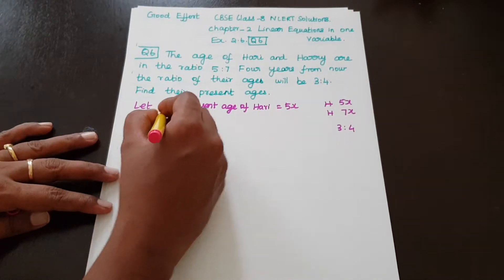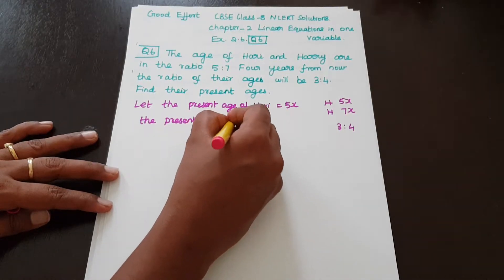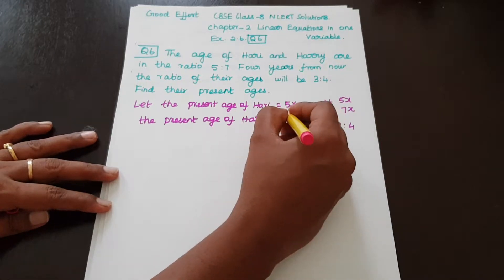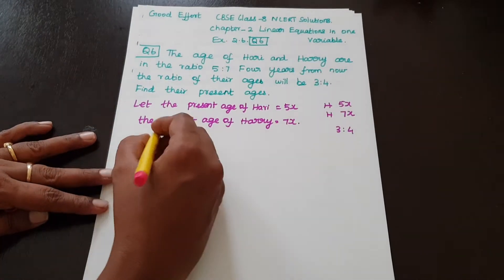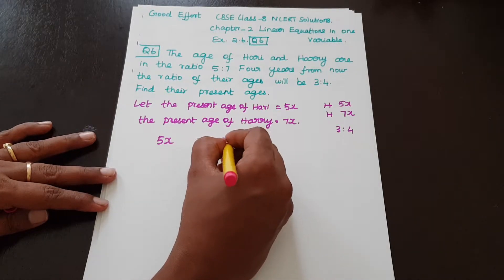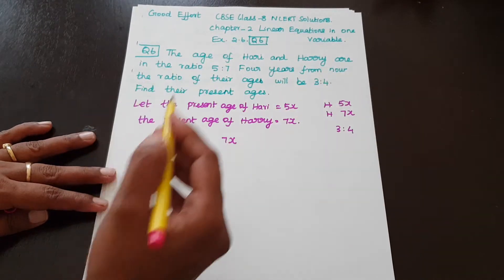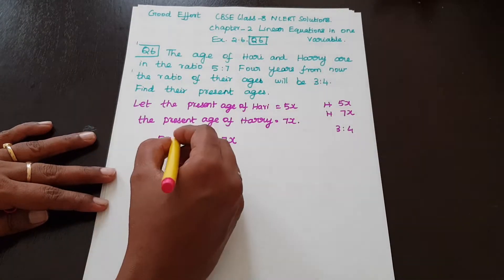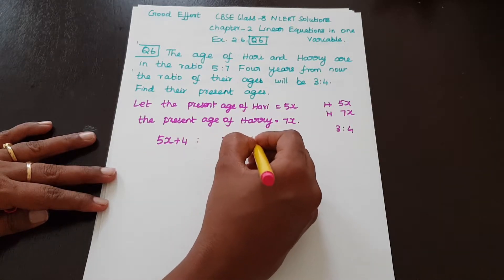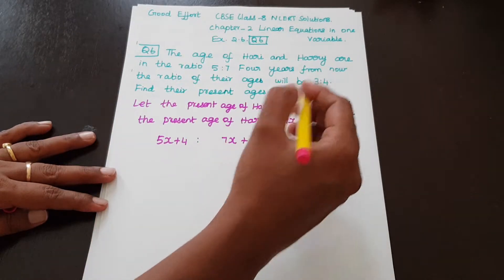Let the present age of Harry be equal to 7x. So the ratio is 5x to 7x. Now, 4 years from now, the ratio of their ages will be 3 is to 4.